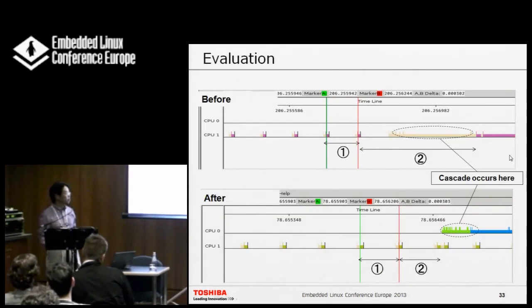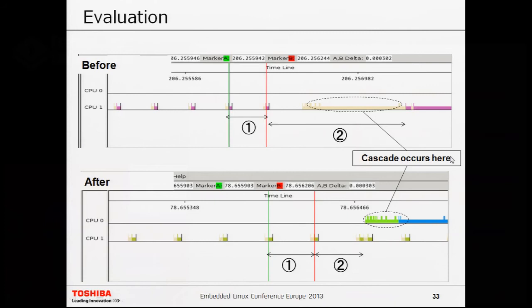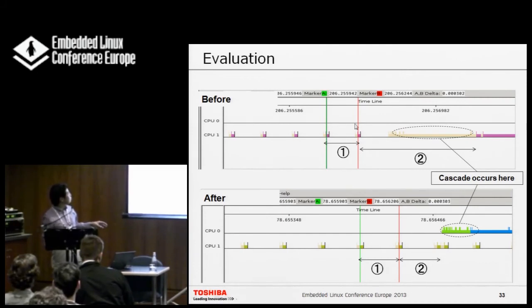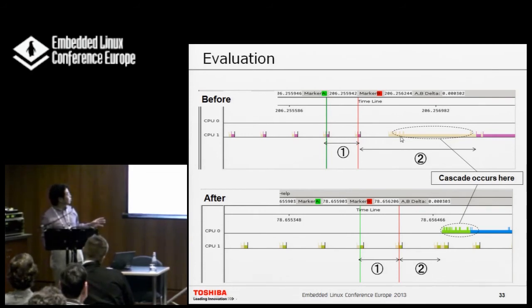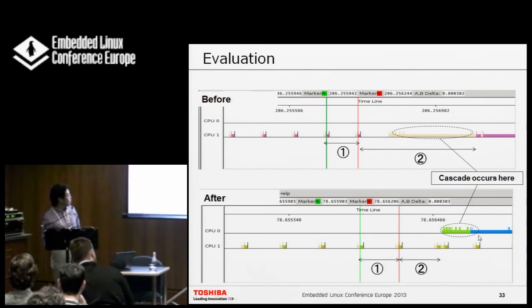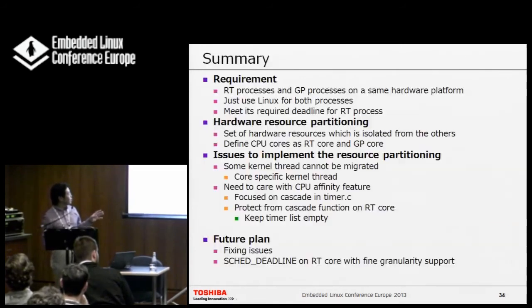After these implementations, we evaluated the real-time latency. Before this implementation, timer cascading occurred on the real-time core. After the implementation, all timers go to the general-purpose core, and timer cascading only occurs on the different core. This is what we achieved.